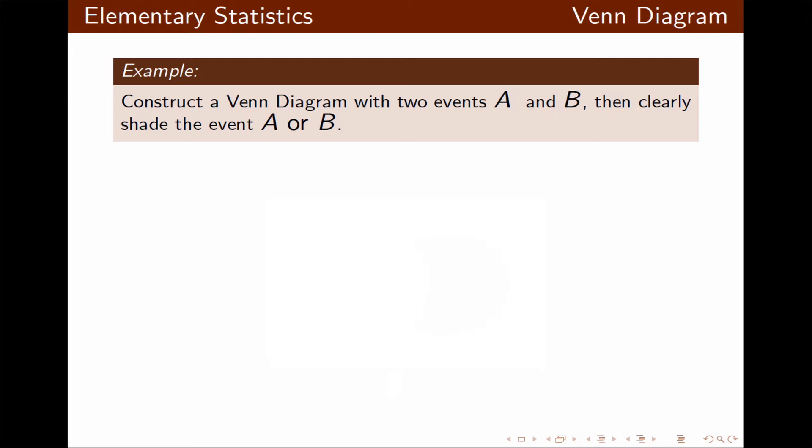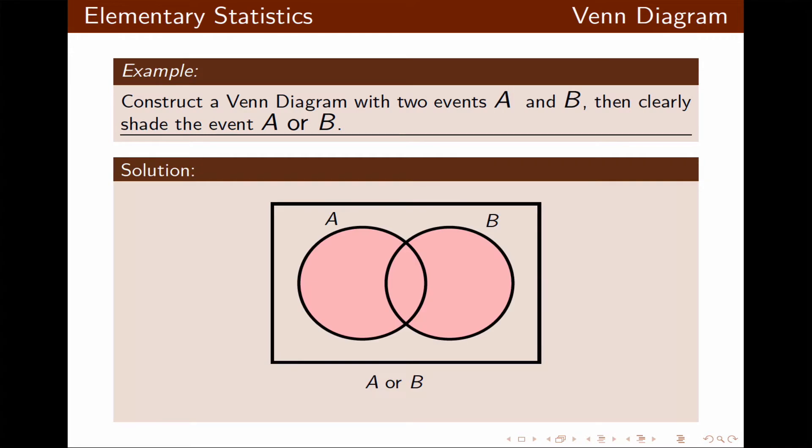Now we want to construct a Venn diagram for two events A and B and clearly shade the event A or B. A or B means we have to be inside of the circles, so I'm shading the inside of both circles labeled A and B.